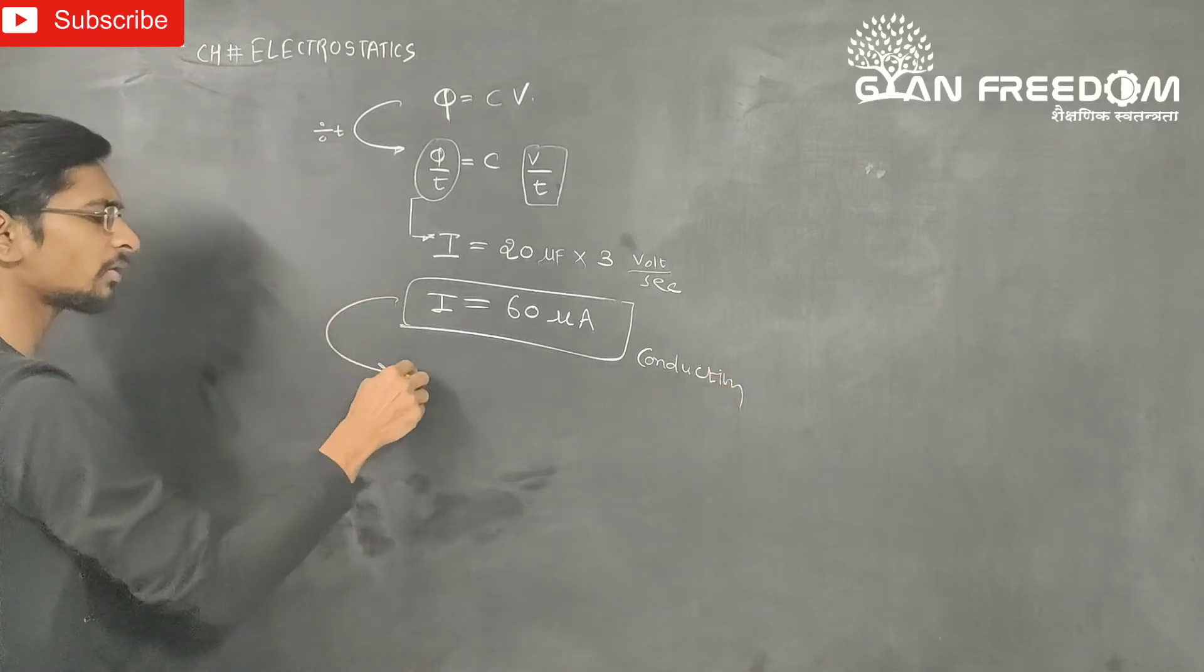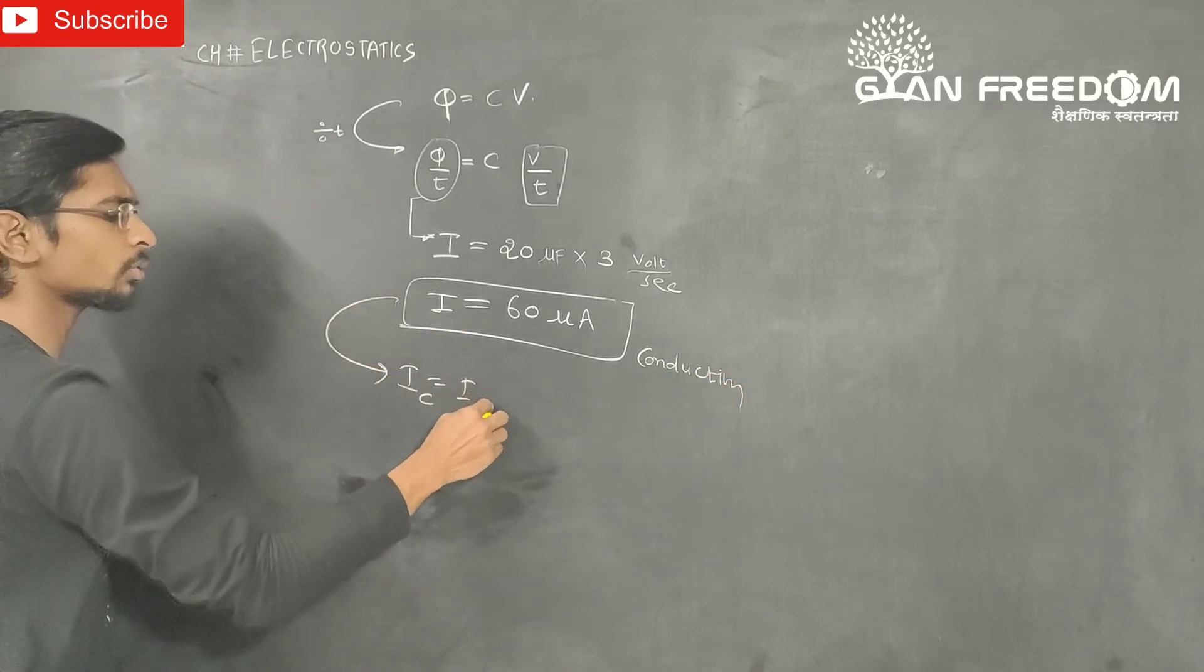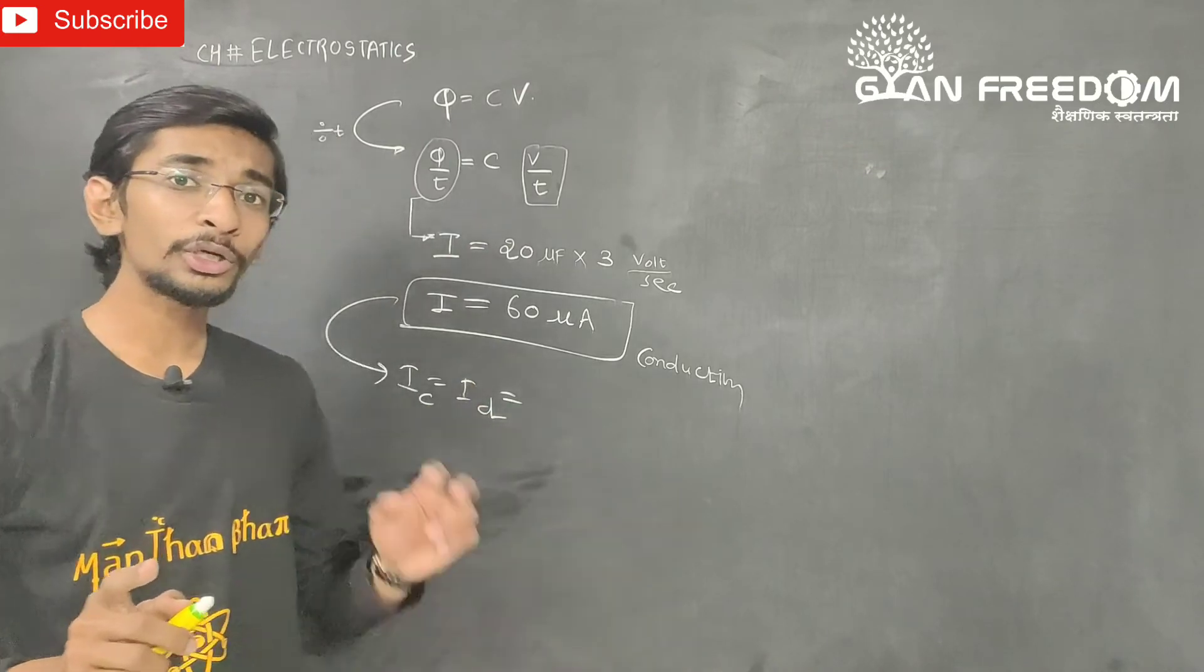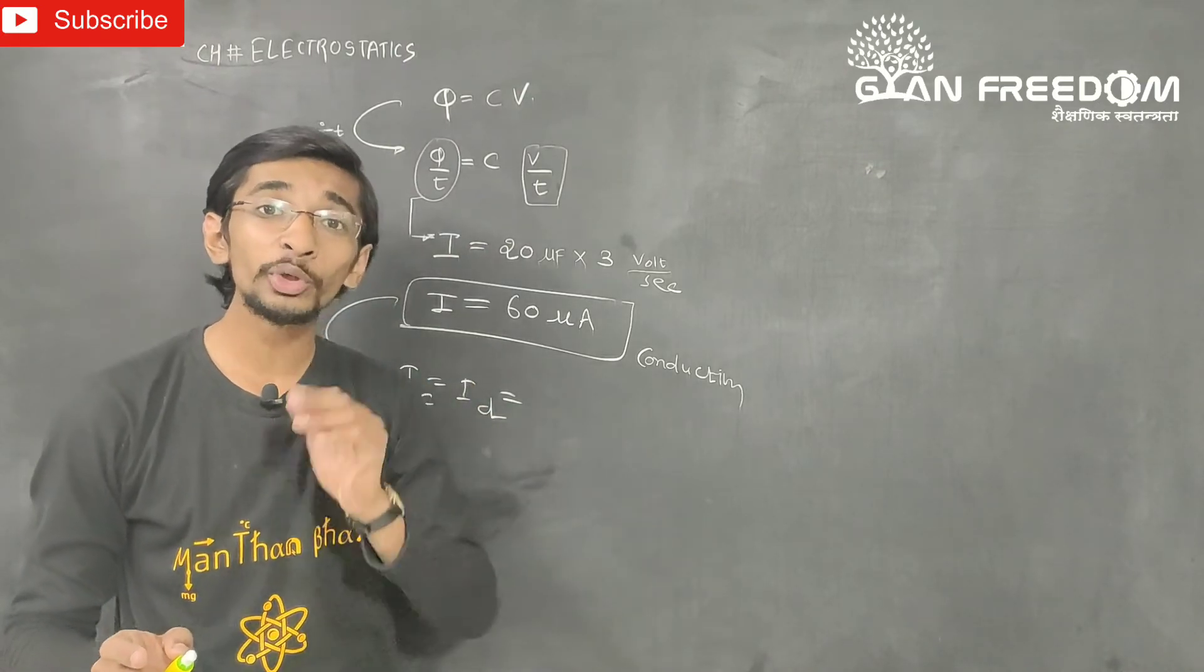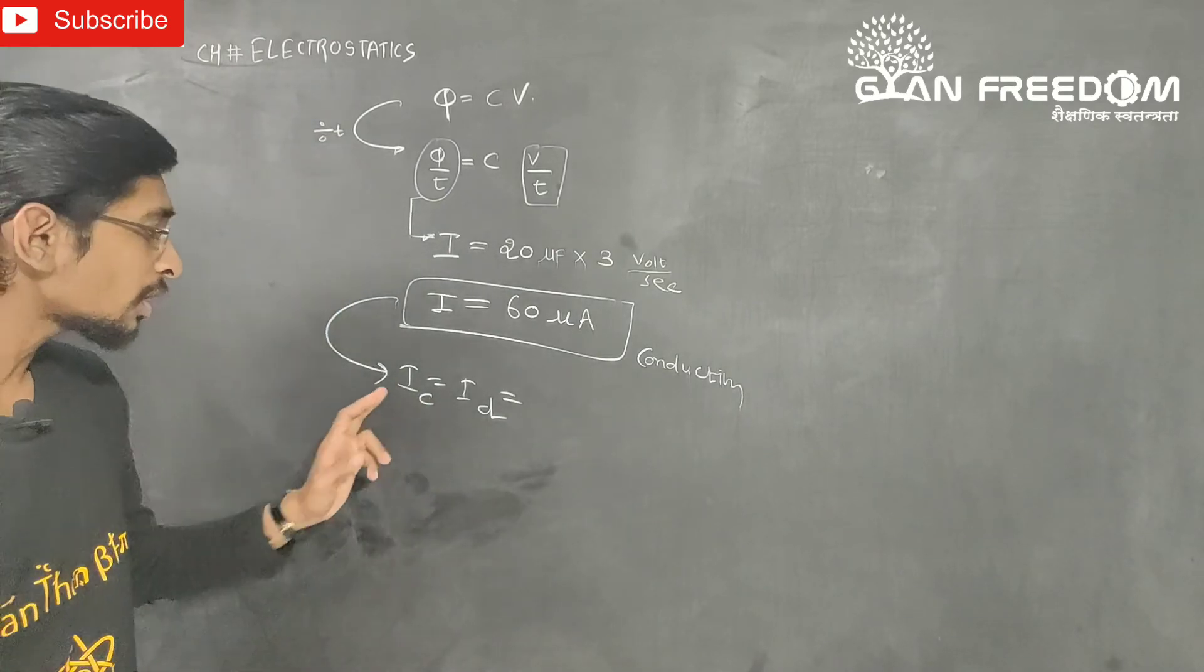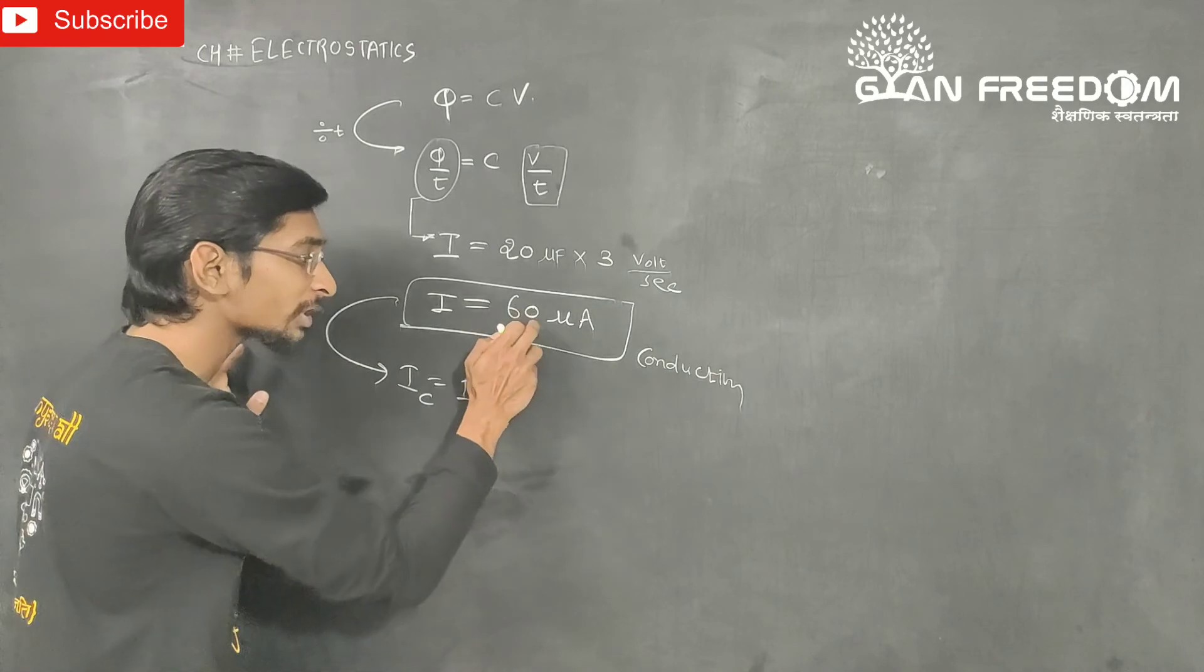And we know that conduction current is equal to displacement current. Displacement current jo hota hai, change of electric field, change of potential ke karan jo displacement current hota hai, Michael Faraday ki hisab se, conduction current ka equal hota hai.